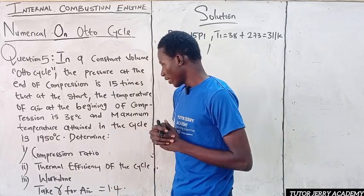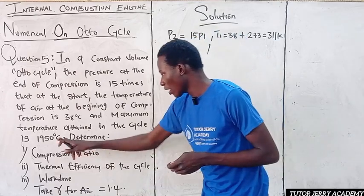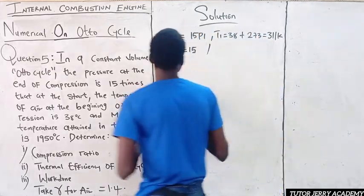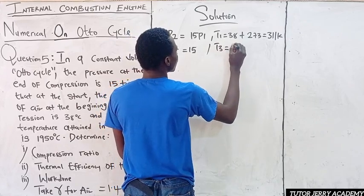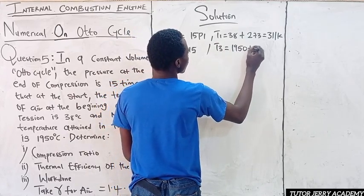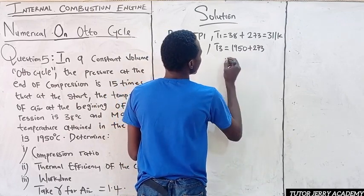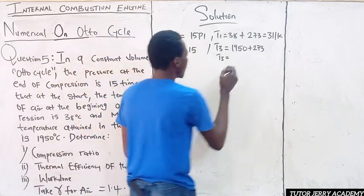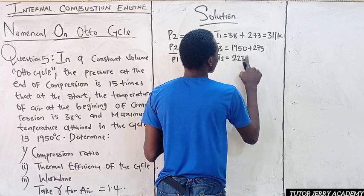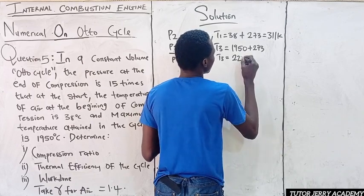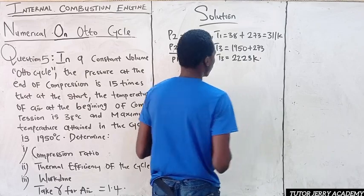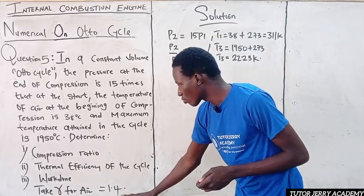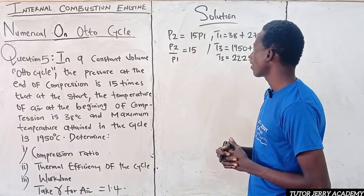The maximum temperature given is 1950 degrees Celsius, so T3 equals 1950 plus 273, which equals 2223 Kelvin. And gamma is given as 1.4. Those are all our parameters.